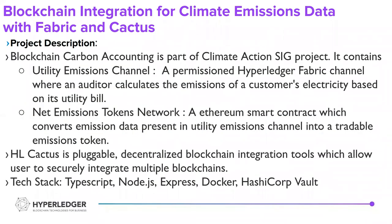A little bit about the project description. The first is carbon accounting, which involves two components. The first one is a Fabric network, where an auditor calculates the emission of a customer's electricity based on its utility bill. The second component is an Ethereum smart contract that converts the emission audited by the auditor into a tradable emission token. Hyperledger Cactus is a pluggable decentralized blockchain integration tool, which allows users to securely integrate multiple blockchains.